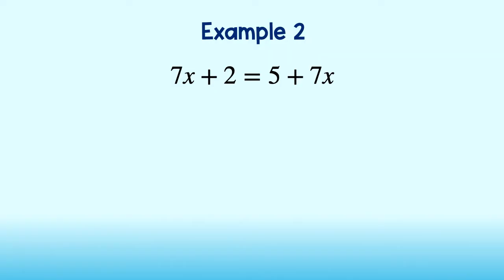Let's take a look at another example. It appears to be an ordinary equation. Let's go ahead and solve. I will subtract 7x on both sides to get 2 equal to 5. However, I know that 2 does not equal 5.